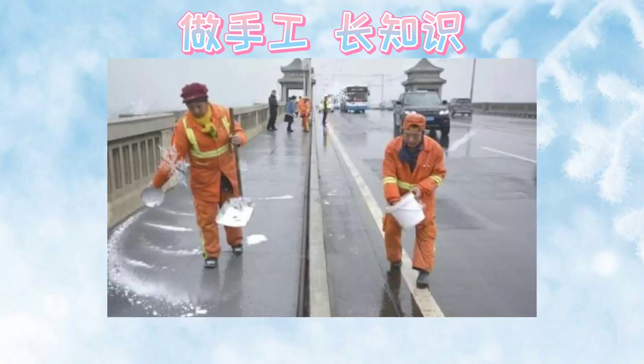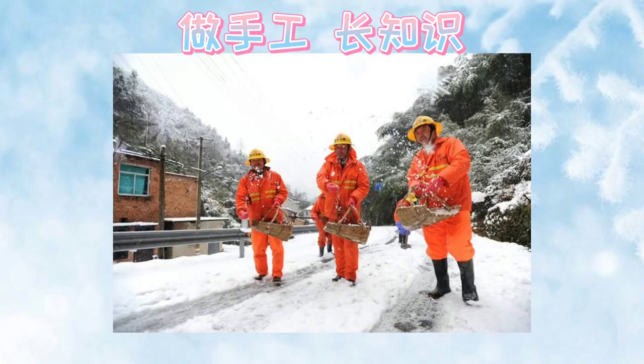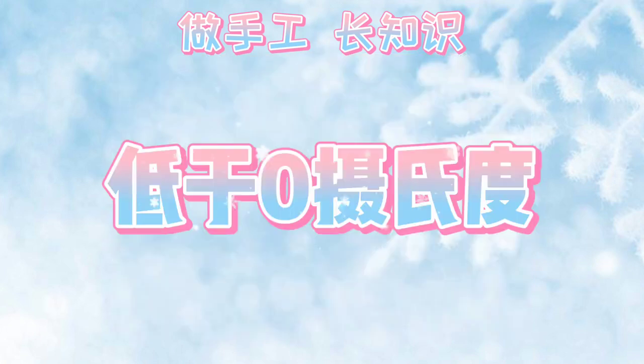正常水的凝固点是零摄氏度，加盐后形成溶液，使其凝固点降低，从而低于零摄氏度，这就是撒盐化雪的基本原理。